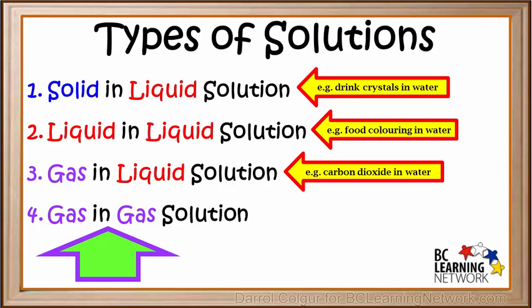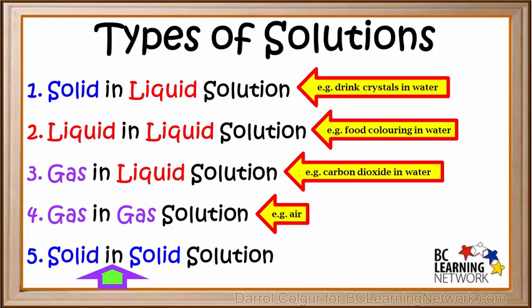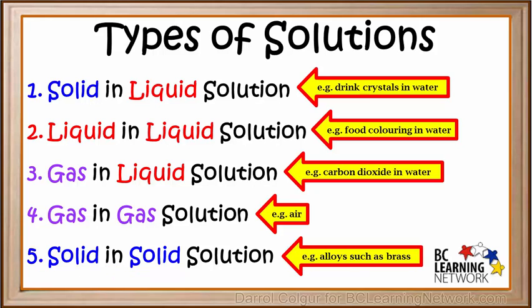The fourth type of solution we looked at was a solution made up of just gases. And the example we used was air, which is nitrogen, oxygen, and other gases all mixed evenly. The last type of solution we considered was a solid in solid solution. Alloys are examples of solid in solid solutions. And we showed you how the alloy brass is produced.